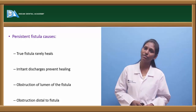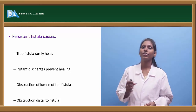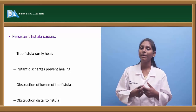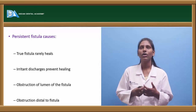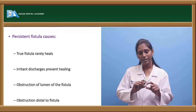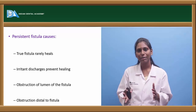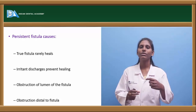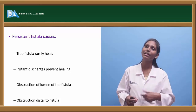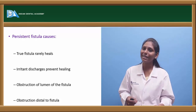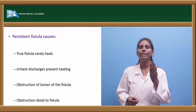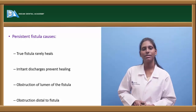Persistent fistulas are usually seen where there are irritant discharges continuously happening. For example, a urachal fistula — a congenital fistula with a connection between the urinary bladder and the umbilical area — usually takes time to heal because there is leakage of urine causing secondary infection. If there are any irritant discharges like fecal material or urine, this can prevent healing, leading to persistent fistula.